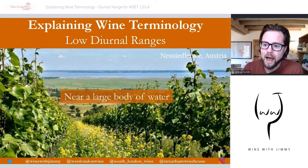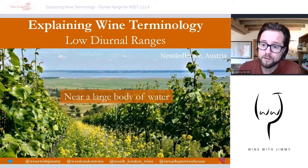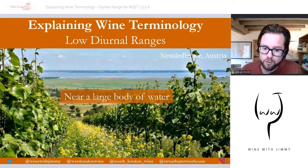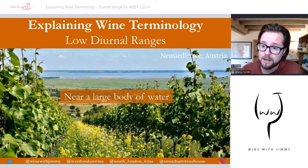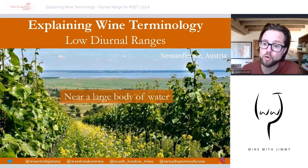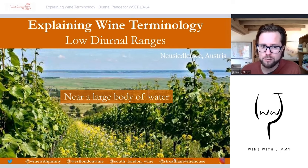Low diurnal ranges are found in areas close to large bodies of water — the obvious examples being seas and oceans, which are massively tempered and moderated. I've given a slightly more niche example: Lake Neusiedl on the Hungarian border of Austria, which has a moderating effect on the localized area. But think mainly about coastal zones — places like the Loire and Bordeaux — which tend to be the most moderated and have low diurnal ranges.